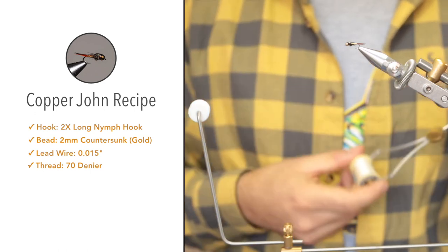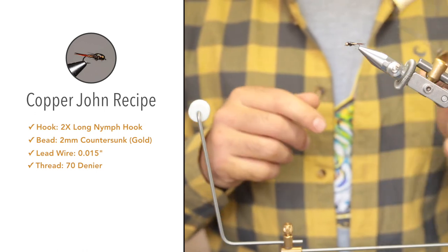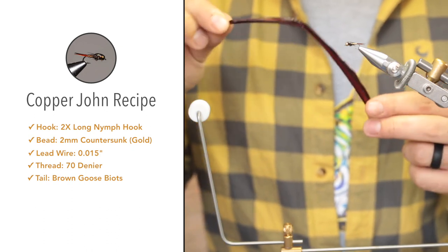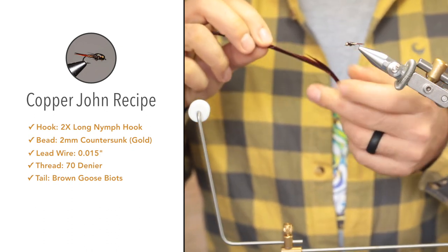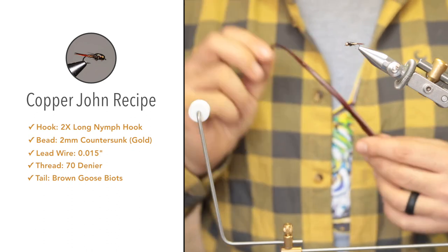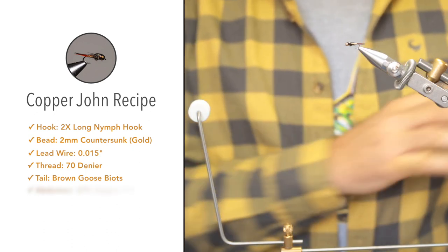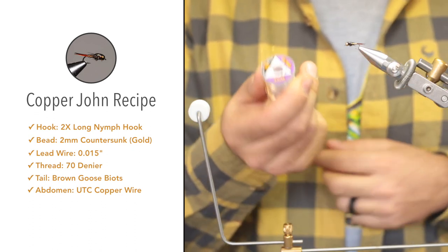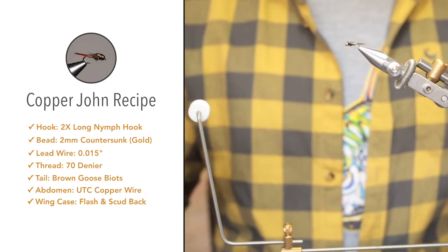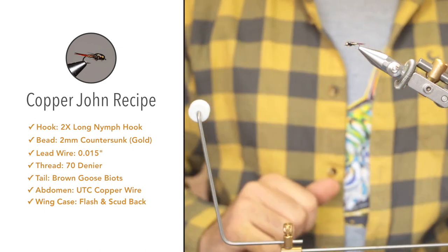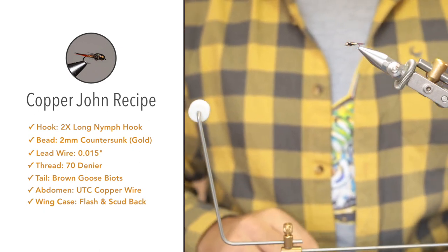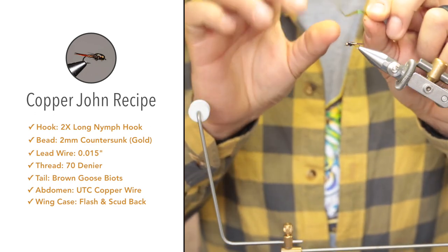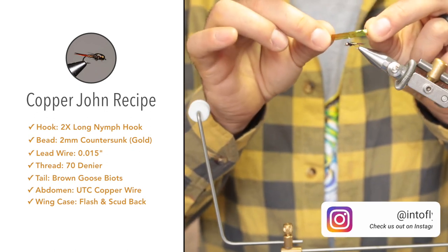For the tail, we'll be using goose biots in brown, just two fibers. For the abdomen, we're using golden ultra wire, UTC ultra wire. The wing case will be made from two different materials: on top, we have flashback material, which is a flat semi-translucent material with flash. I've even used candy wrappers.